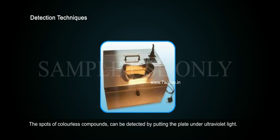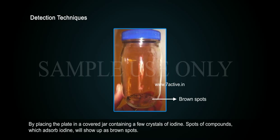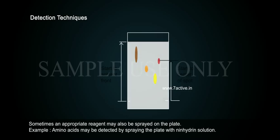Detection Techniques: 1. The spots of colourless compounds can be detected by putting the plate under ultraviolet light. 2. By placing the plate in a covered jar containing a few crystals of iodine — spots of compounds which adsorb iodine will show up as brown spots. 3. Sometimes, an appropriate reagent may also be sprayed on the plate. For example, amino acids may be detected by spraying the plate with ninhydrin solution.